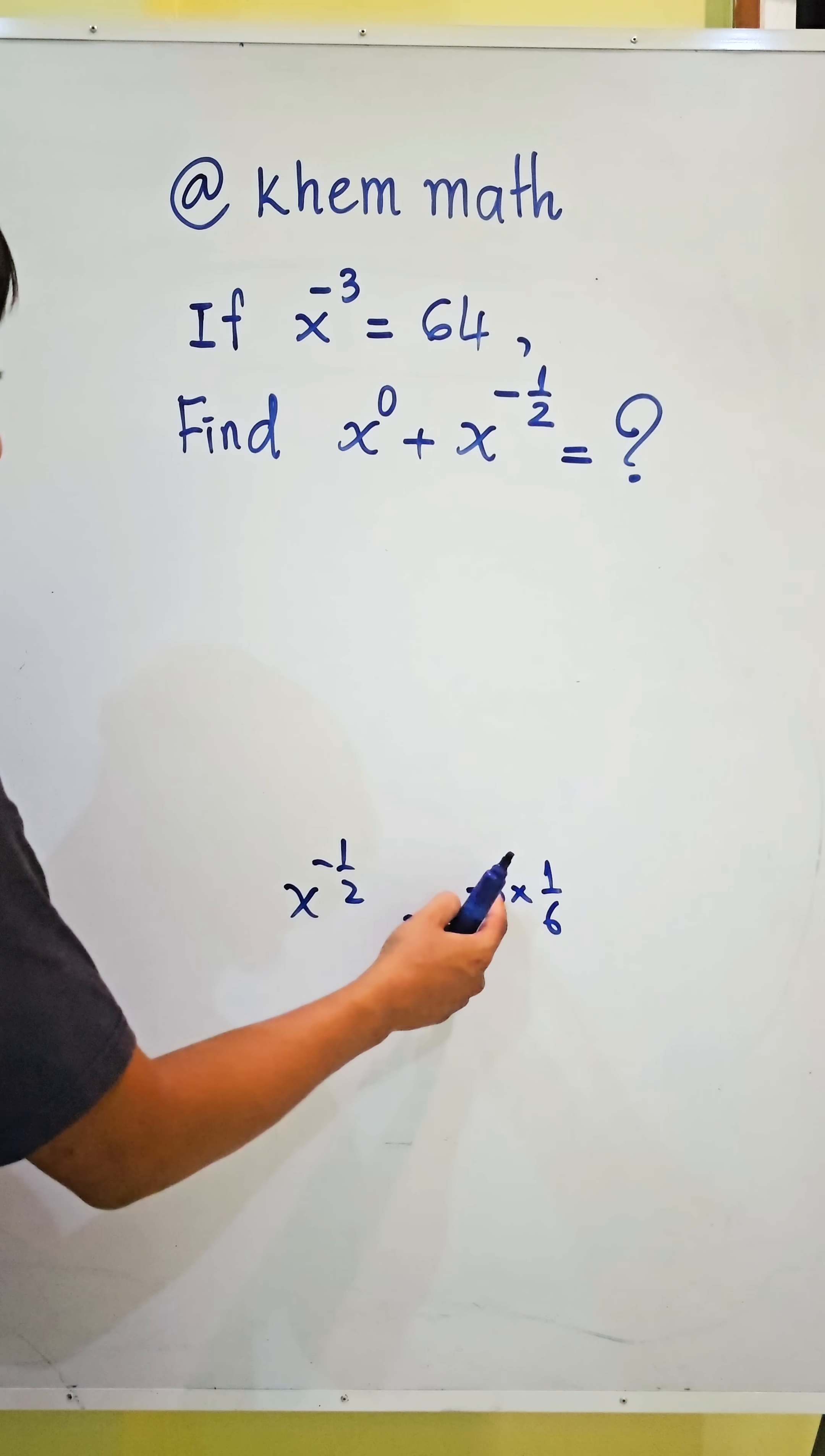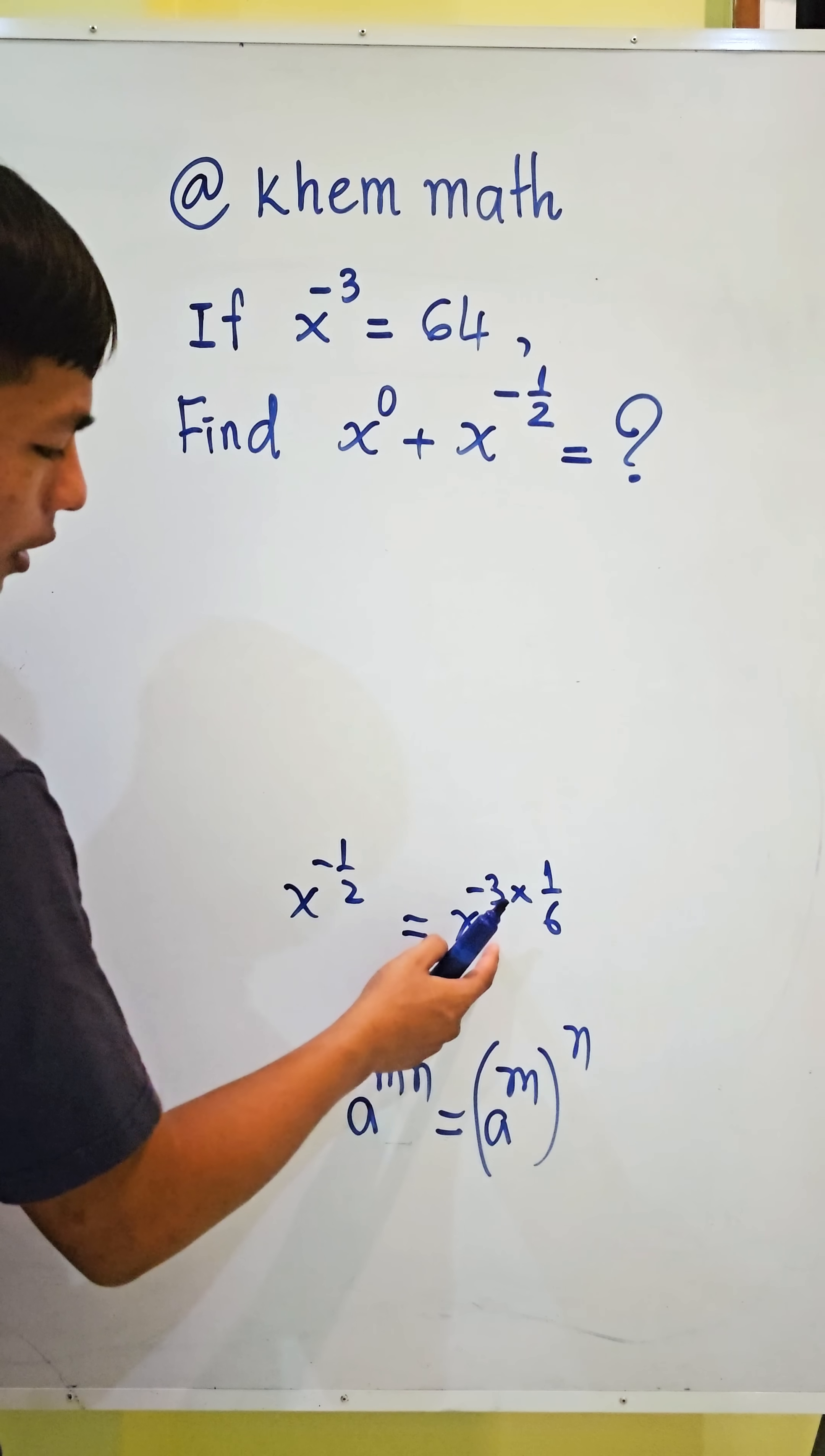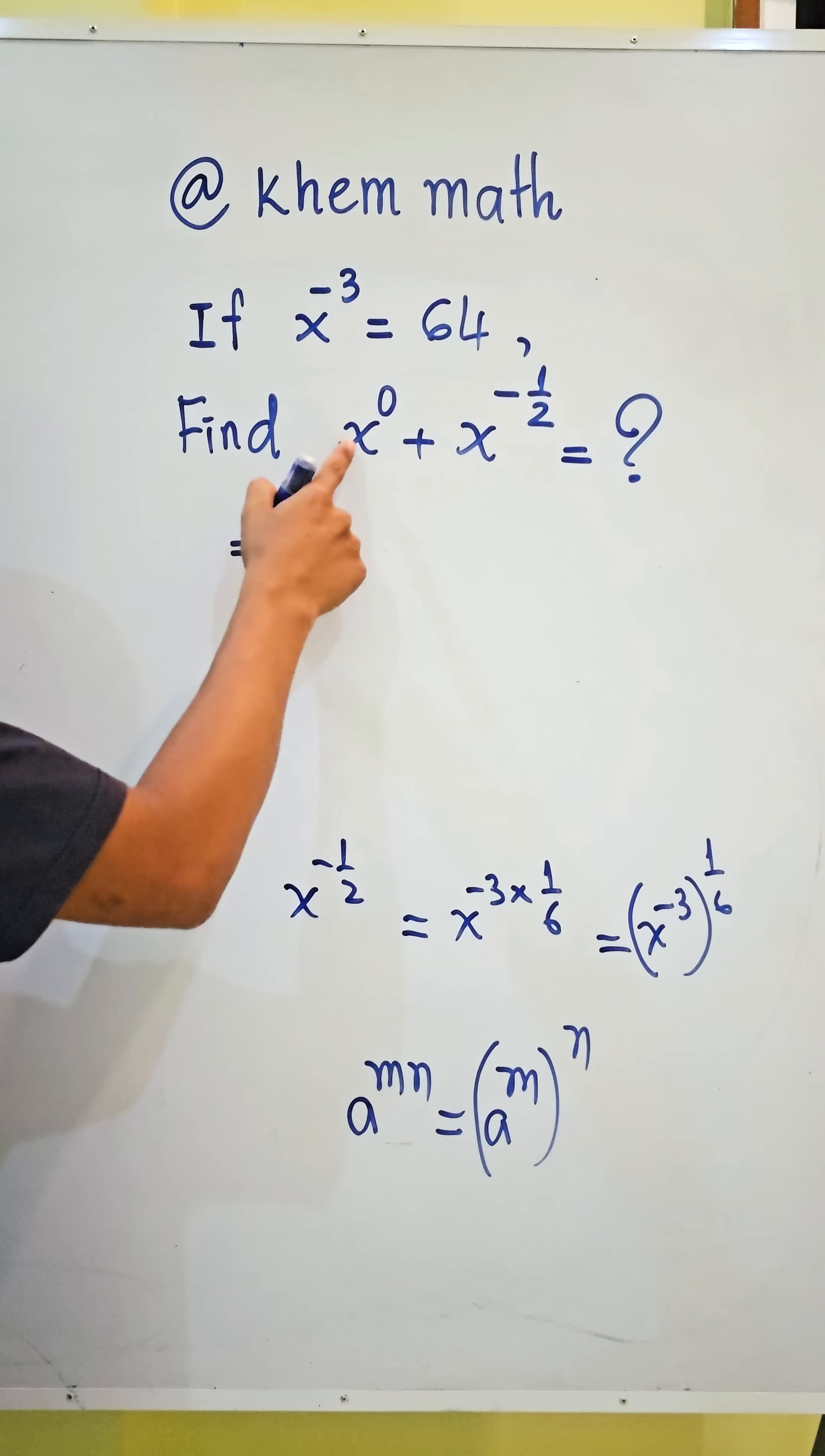If we simplify this, we get negative 1 divided by 2. And here we use the formula: a power m times n equals a power m all power n. So here equals x power negative 3 all power 1 divided by 6, and x power 0 equals 1.